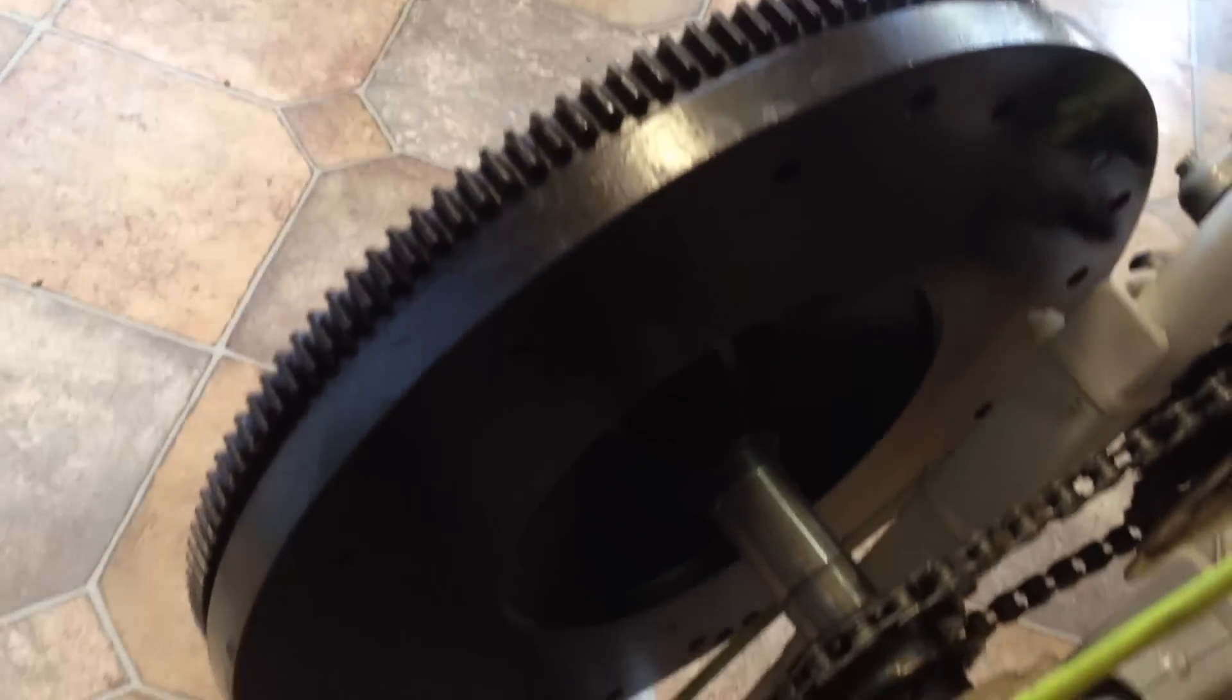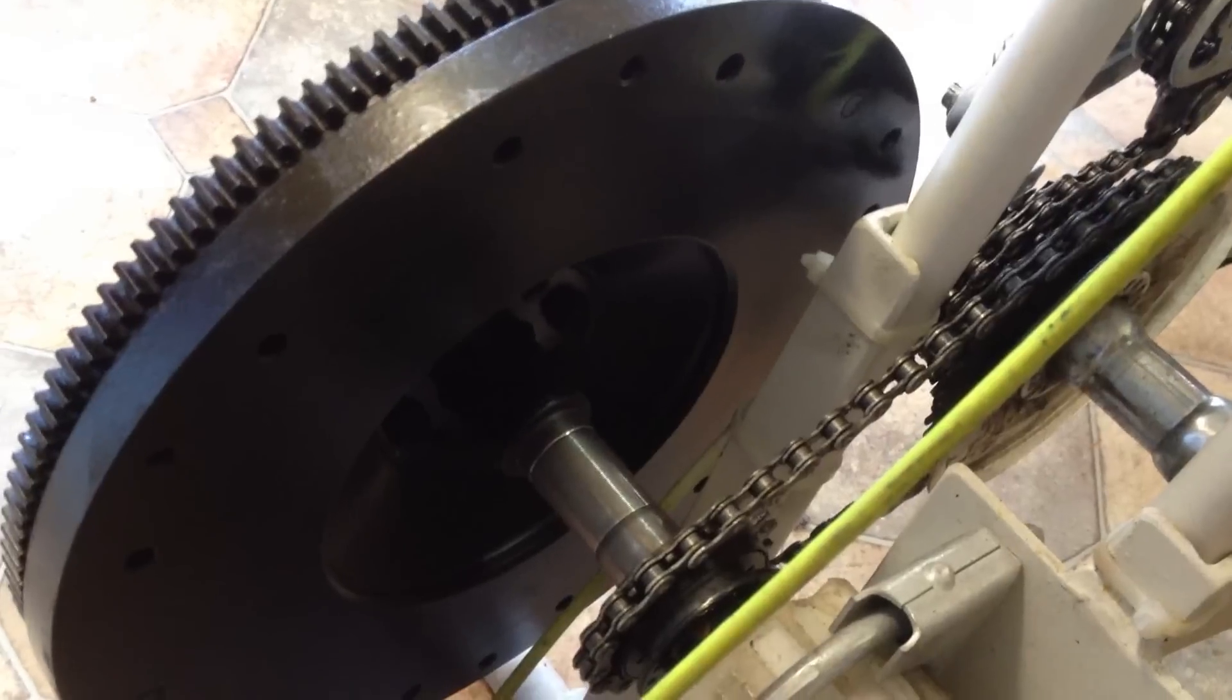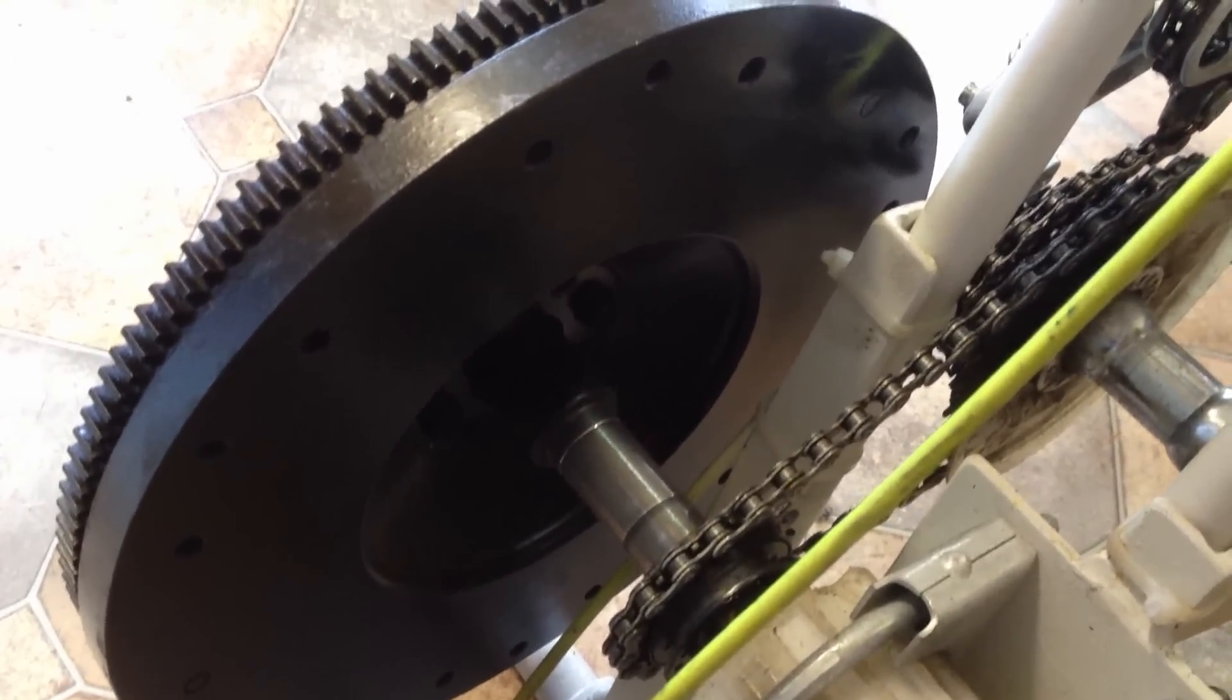And we have five speeds if you can see that down there, with a derailleur to select different speeds that we want. That's also a big heavy flywheel that helps level out or smooth out any cogging that's in the generator and makes it easier to pedal.